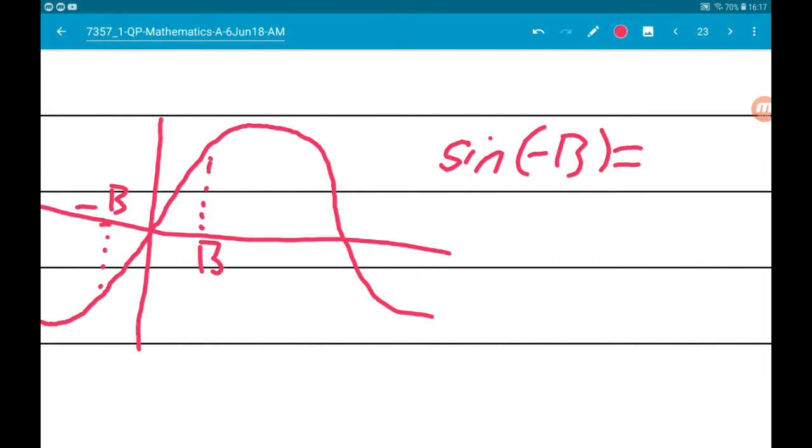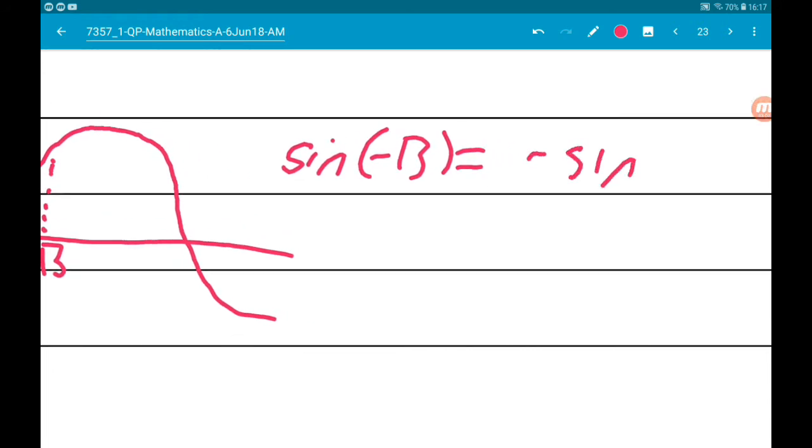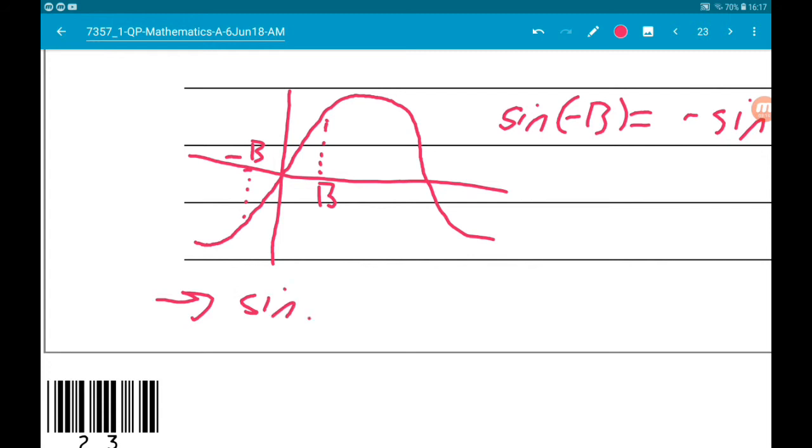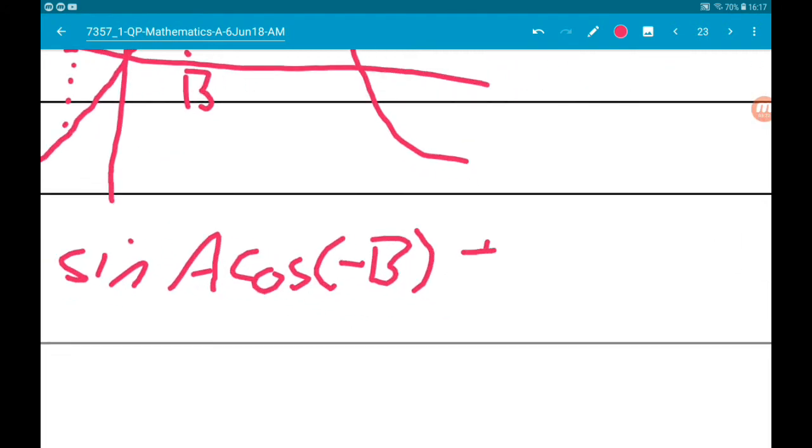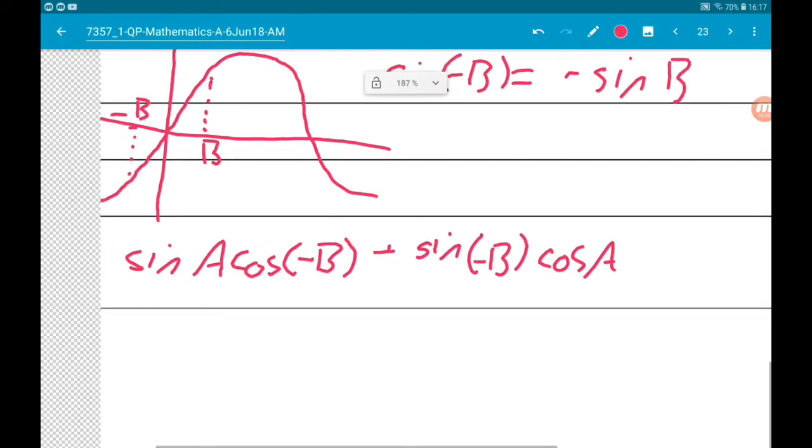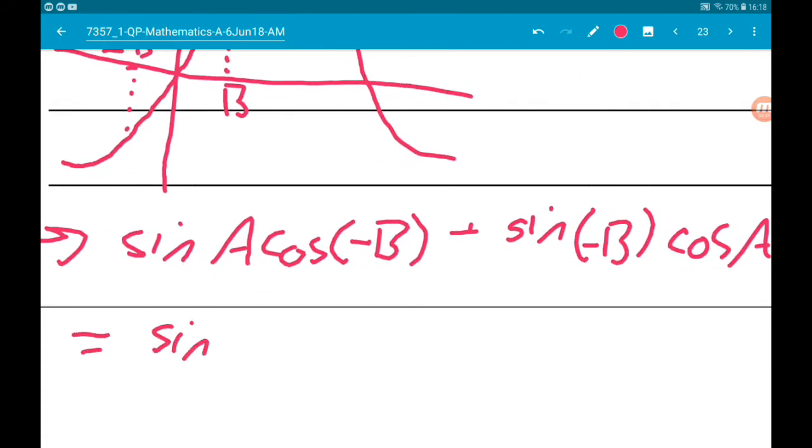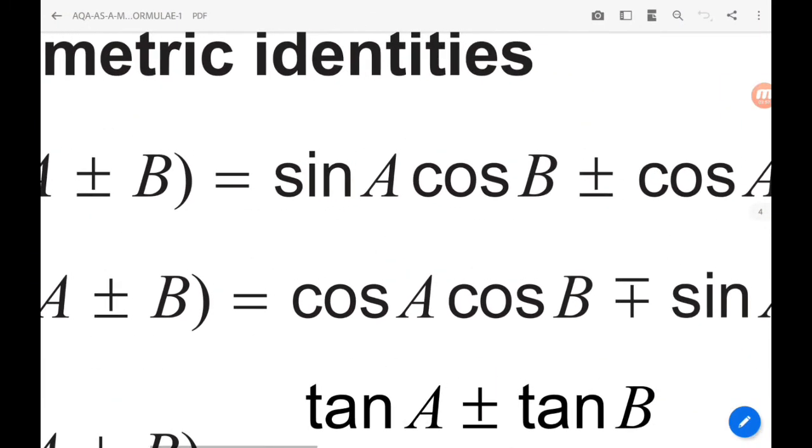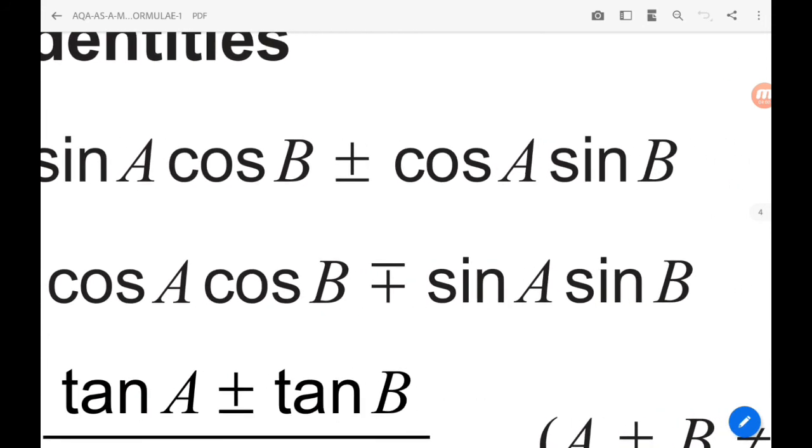Therefore, sin of A minus B equals sin A cos of minus B plus sin of minus B cos of A, which equals sin A cos B minus sin B cos A, which is what we want it to be. So get the question done.